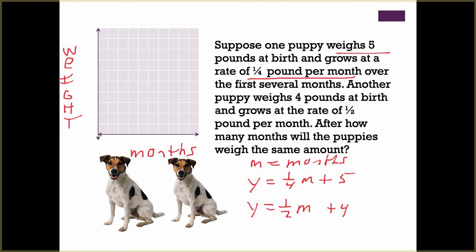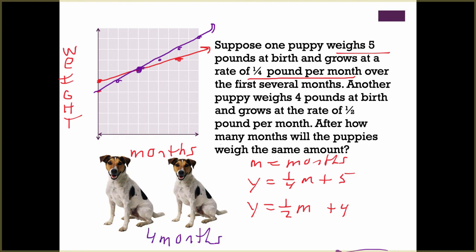The first puppy has a y-intercept of 5 and goes up 1 pound for every 4 months. The second puppy starts at 4 pounds and grows a half pound per month — up 1 over 2. Notice I didn't put an arrow on the left because we can't go back in time. The lines cross right there. After how many months will the puppies weigh the same? After 4 months, and they will both weigh 6 pounds. For a word problem, write the two equations, graph them, see where they cross, and answer the question.